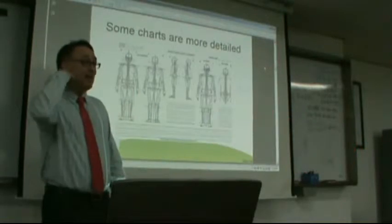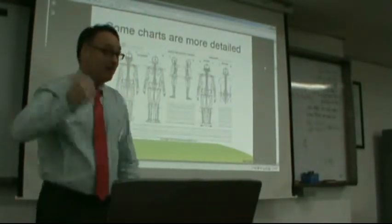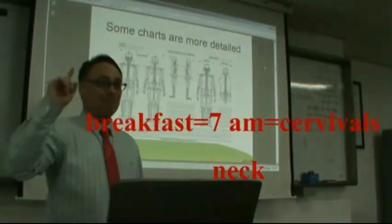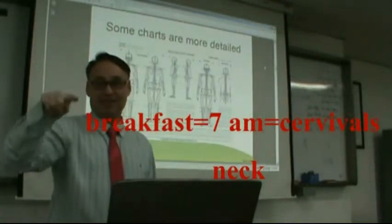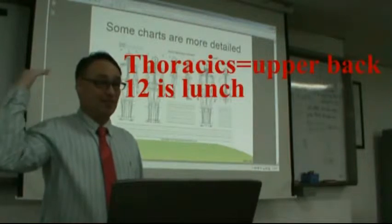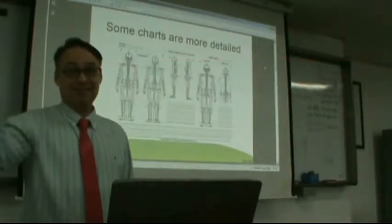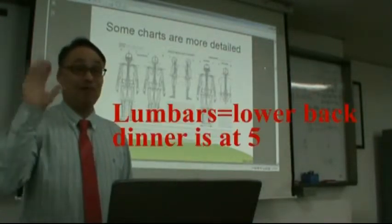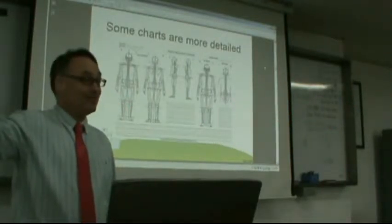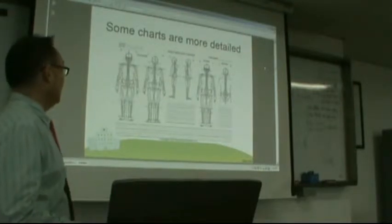How many neck vertebrae do we have? I'll teach you an easy way to remember the neck, back, and low back. In the morning I wake up and eat breakfast at seven o'clock — the neck has seven cervical bones, remember: breakfast at seven. At lunchtime I eat at twelve o'clock — the thoracics have twelve vertebrae. I eat dinner early at five o'clock — the lumbars have five vertebrae. Seven, twelve, five — you can never forget.